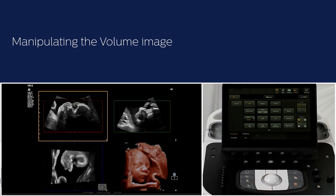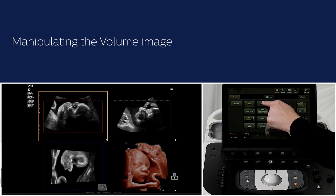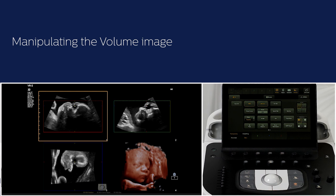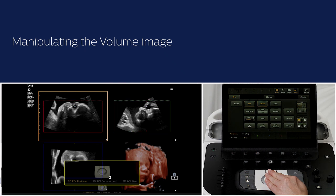Manipulating the volume image: if there are structures obscuring the fetal face, a reveal can be used to automatically remove these structures to get a better view of the fetal face. Optimize the region of interest boxes to see the desired volume image by using the trackball and the buttons next to it to change the region of interest position, size, or curve adjust.